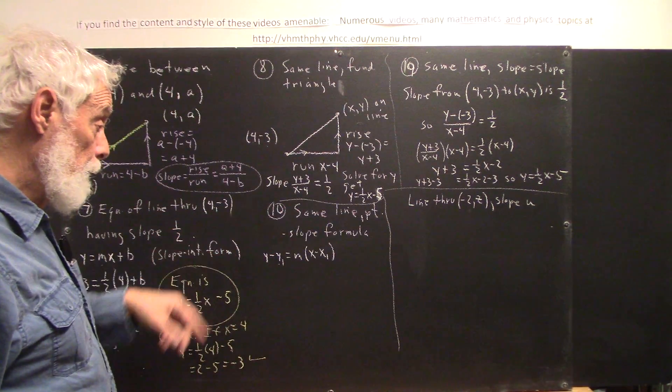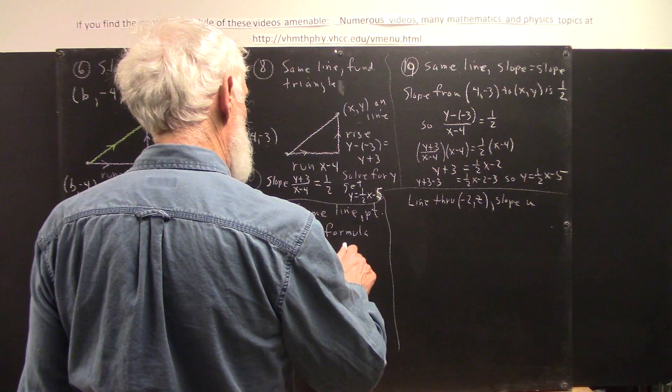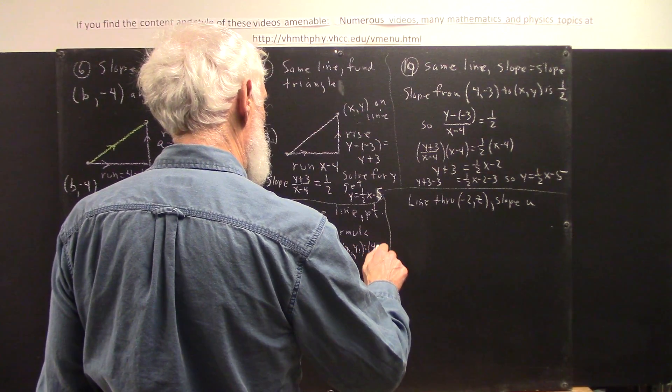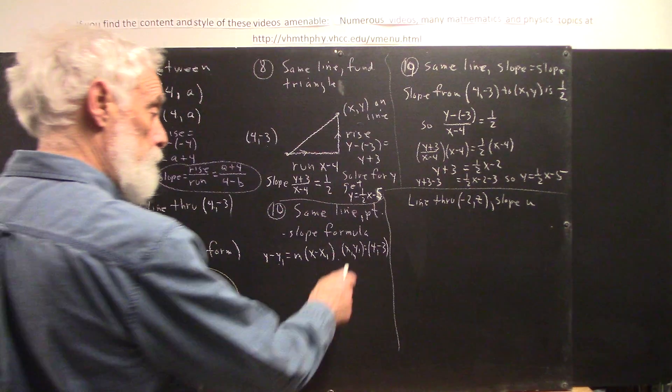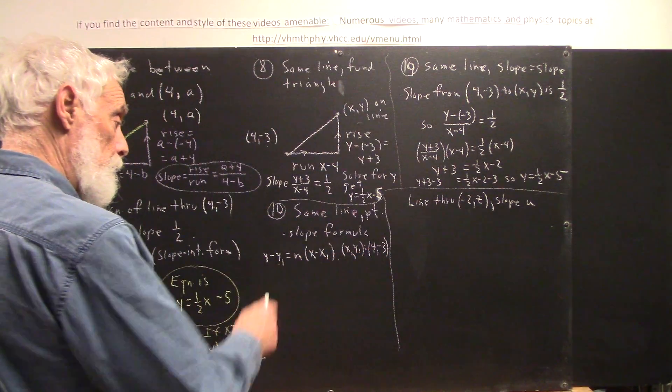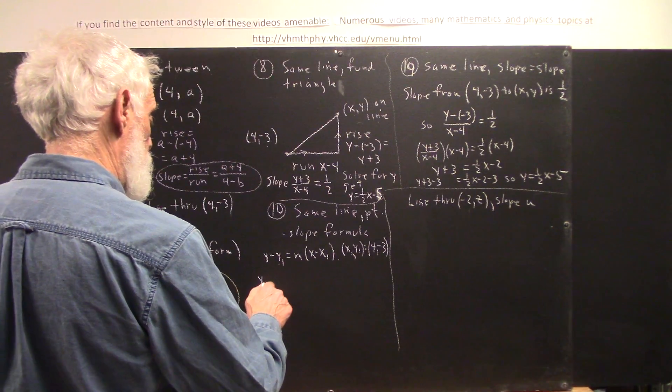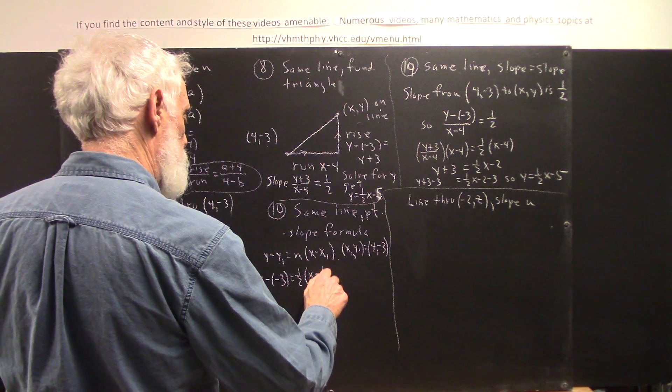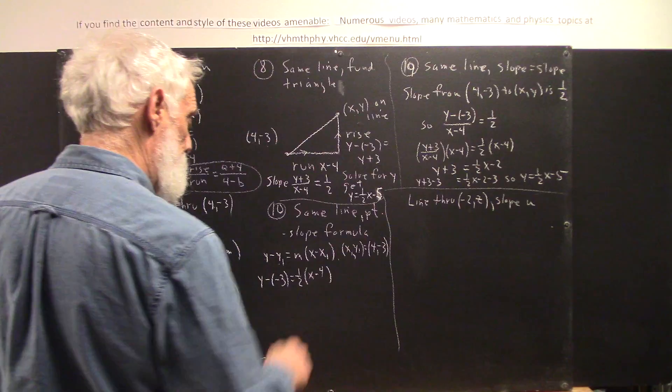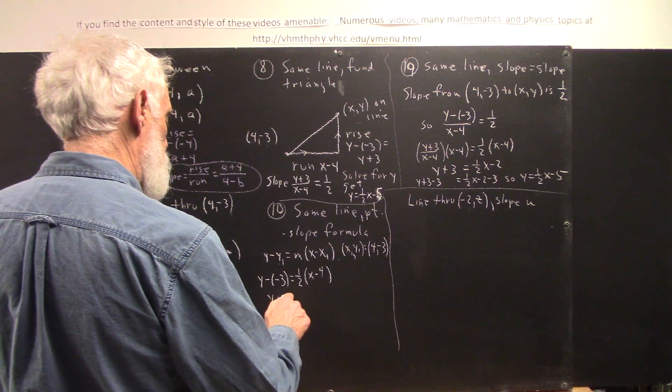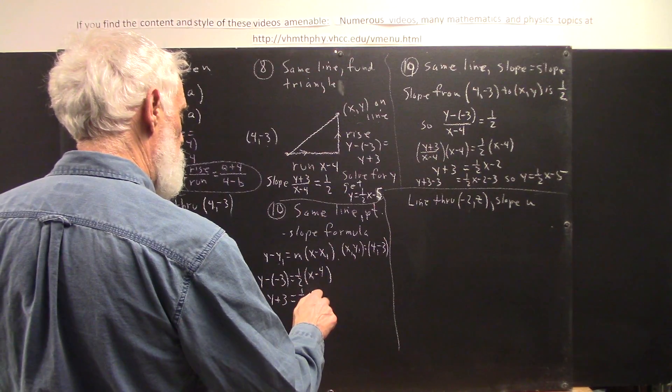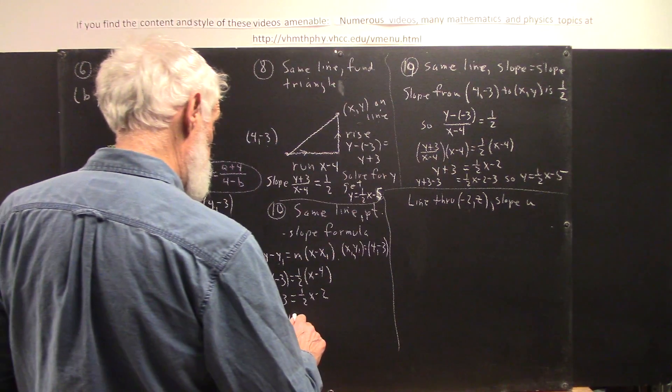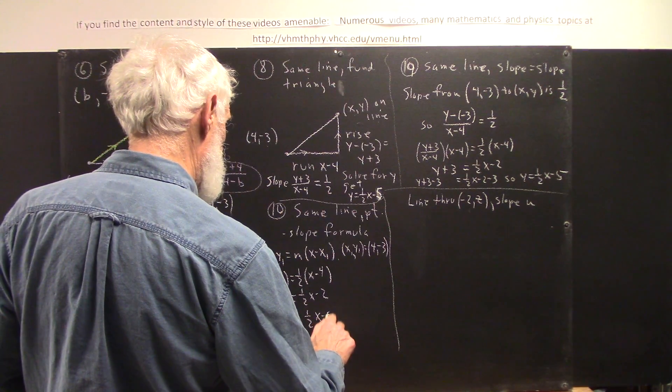Well, the known point is 4 negative 3. So, we'll just note that x1, y1 is 4 negative 3. So, x1 is 4, y1 is negative 3. y minus y1 is then going to be y minus negative 3. m is 1 half, and we multiply that then by x minus 4. So, we get y plus 3 equals 1 half x minus 2. And that leads us to y equals 1 half x minus 5.